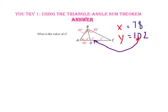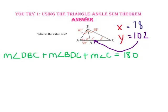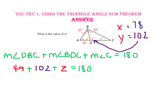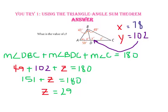Since we know Y has a value of 102, we now know two angle measures for triangle BDC. The triangle angle sum theorem states: measure of angle DBC plus measure of angle BDC plus measure of angle C equals 180. Substituting 49 for angle DBC, 102 for angle BDC, and Z for angle C gives 151 plus Z equals 180. Using the subtraction property of equality, Z equals 29. We should check: 29 plus 49 plus 102 equals 180 degrees for this triangle — correct.